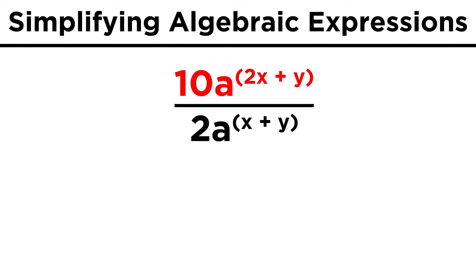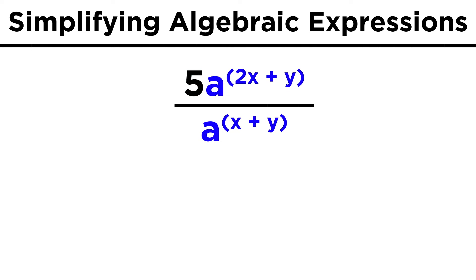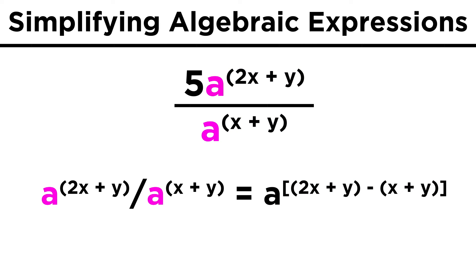Let's try another, ten a to the two x plus y power divided by two a to the x plus y power. Here we can see that ten over two can be done separately, which gives us five. Now to deal with this part of it, again we can just use the rule for dividing some base raised to two different exponents. We just subtract them. So a to the two x plus y over a to the x plus y gives us a to the two x plus y minus the quantity x plus y. This only works because a is the base in both terms. If the bases were different, we couldn't do this.